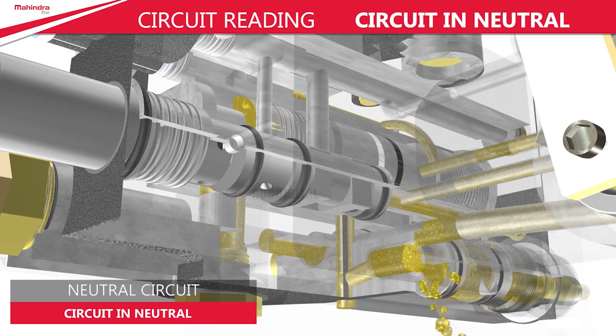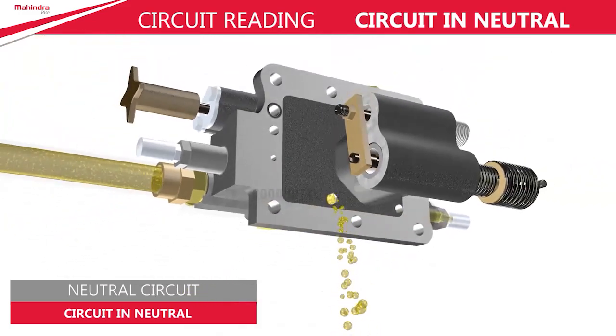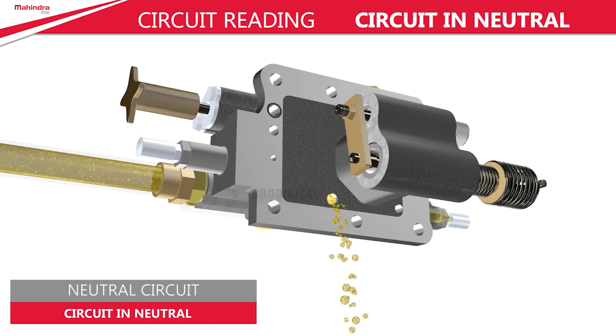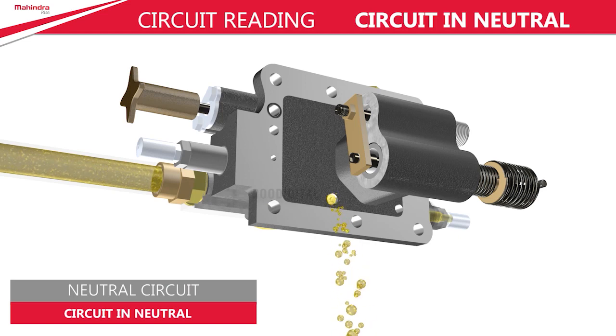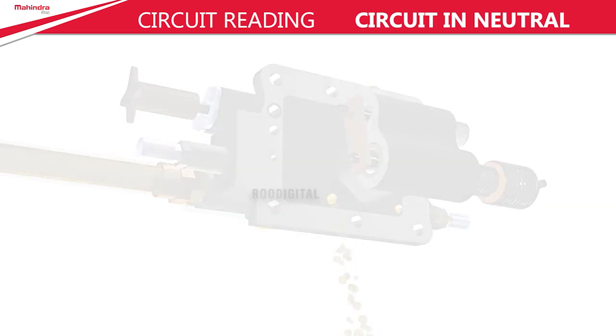The remaining quantity of oil is carried away from the regulating valve ball seat. This is the neutral circuit, as it does not create any motion in the main piston and thus in the implement. This brings us to the end of the neutral circuit.